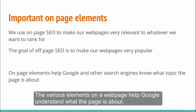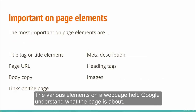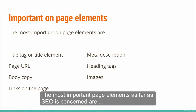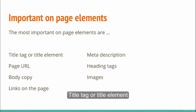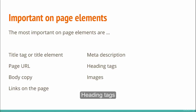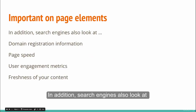The various elements of a web page help Google understand what the page is about. The most important page elements as far as SEO is concerned are: title tag or title element, meta description, page URL, heading tags, body copy, and images and links on the page.